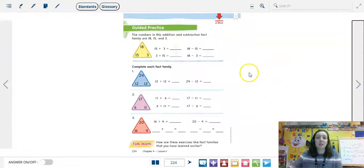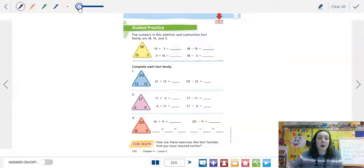So the numbers in this addition and subtraction fact family are 18, 15, and 3. So then they showed us already how to write the related sentences. They have 15 plus 3, so the two parts together is 18.